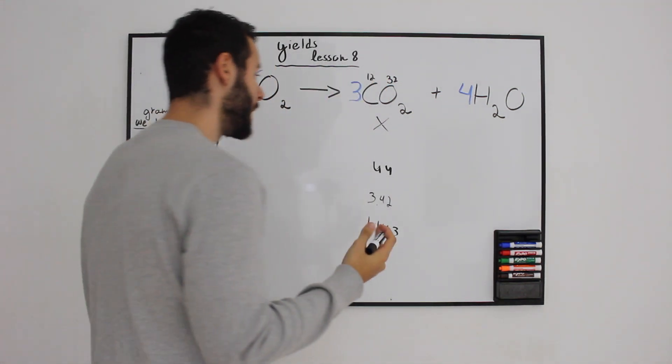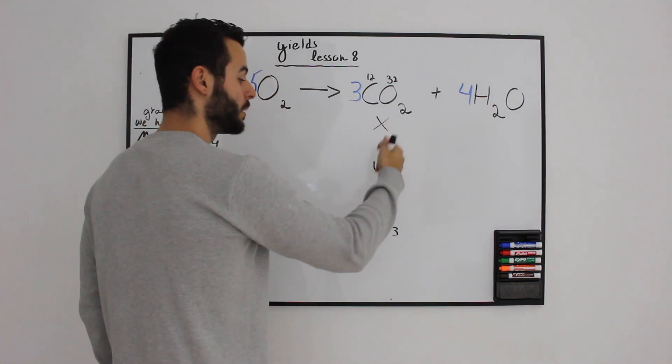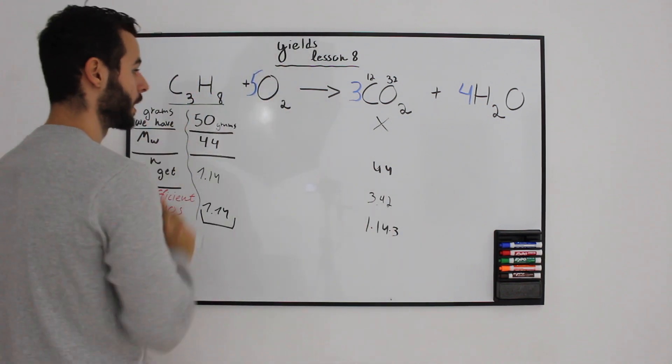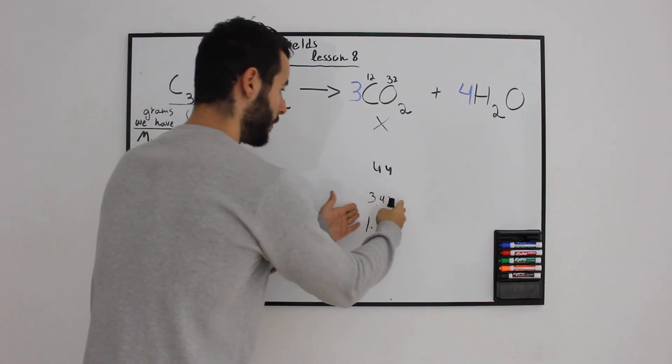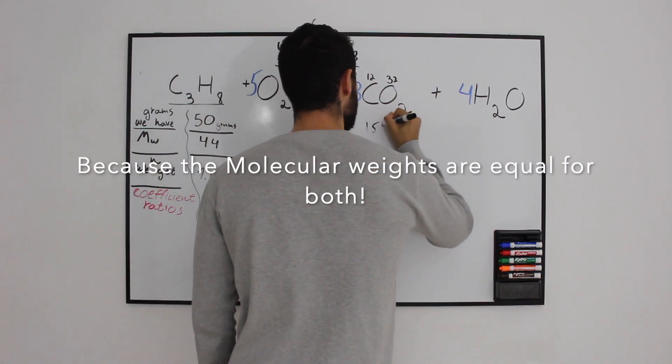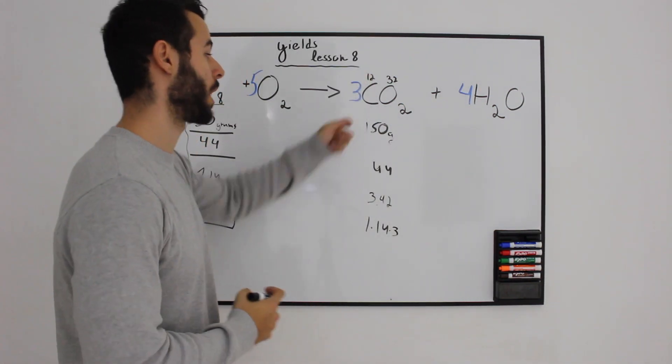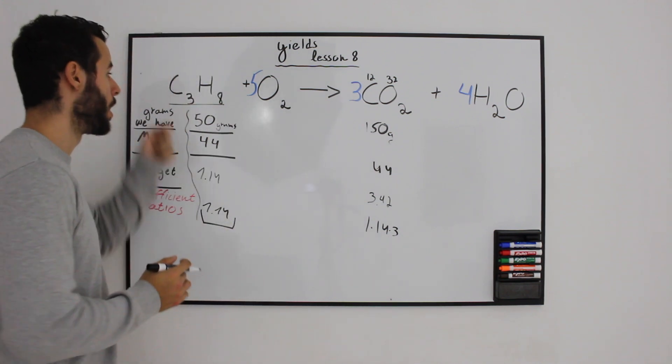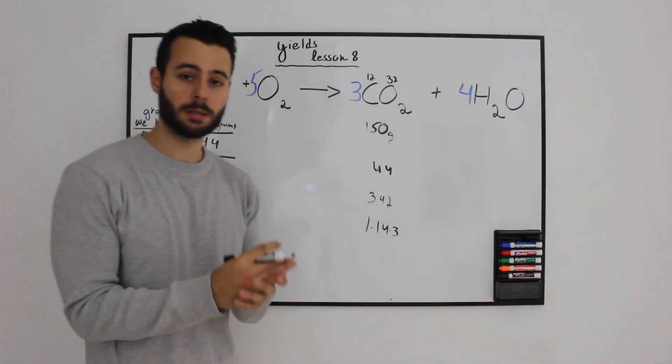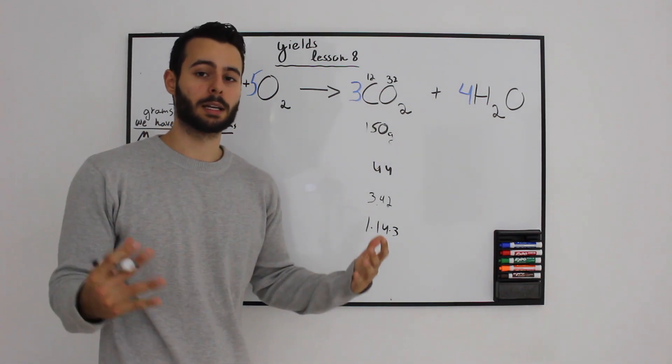Now check it out. We have the number of moles and the molecular weight. We know we have 50 grams on this side, so we'll have 3 times the amount, which means we get 150 grams of carbon dioxide. We calculated the theoretical amount of carbon dioxide from 50 grams of propane reacting with unlimited oxygen, which means 150 grams of carbon dioxide is 100% theoretical yield.